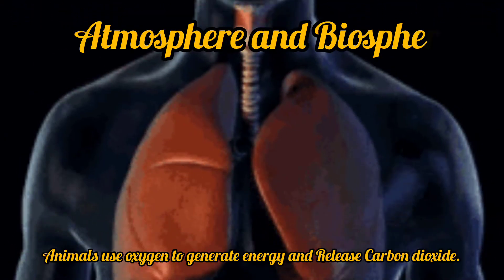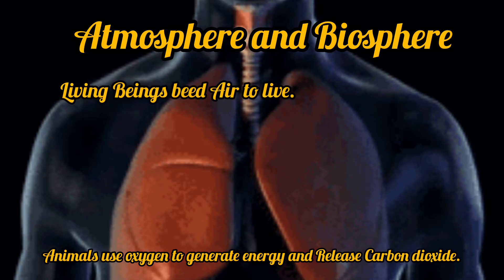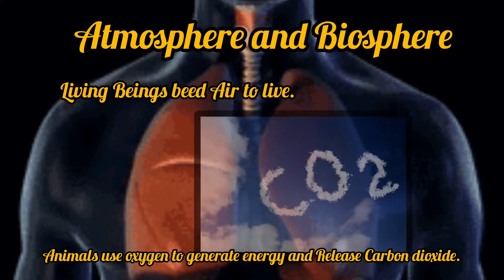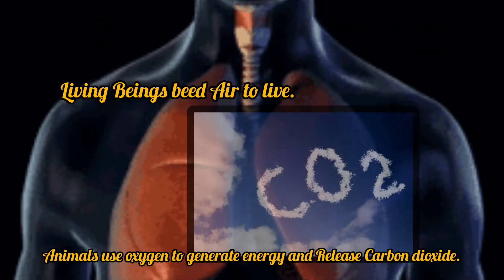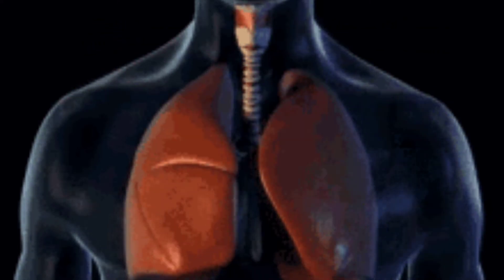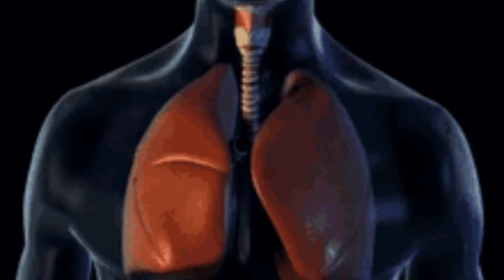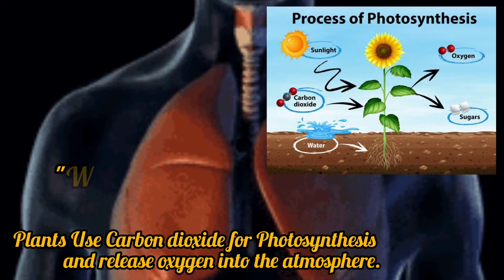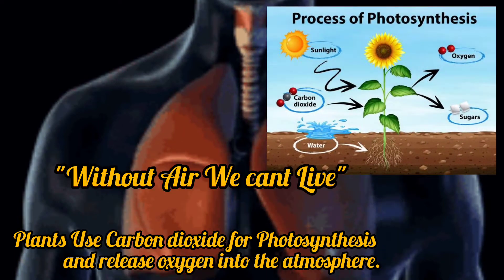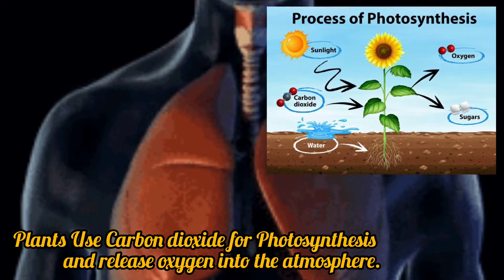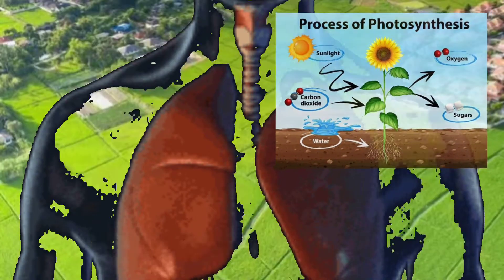Living beings need air to live. Animals use oxygen to generate energy and release carbon dioxide. Plants use carbon dioxide for photosynthesis and release oxygen into the atmosphere.